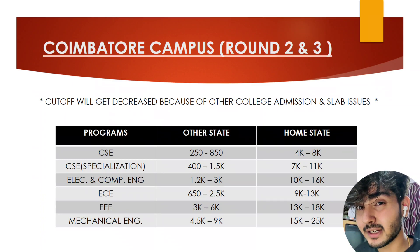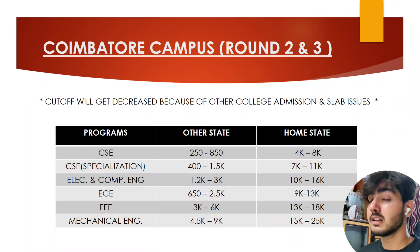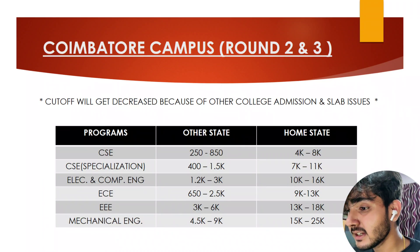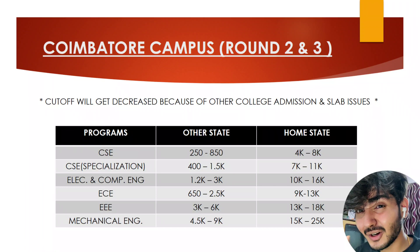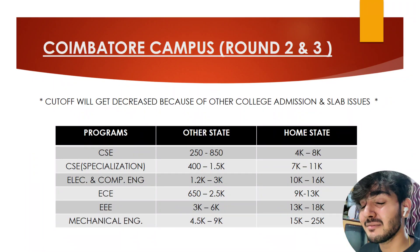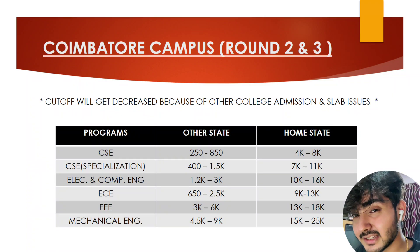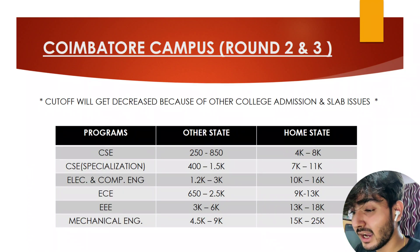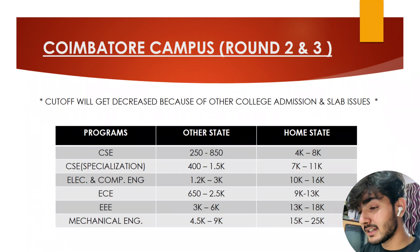These are expected data only — not fixed data — so use them just to get an idea. If you didn't get a seat in round one, don't worry, you will get it. If you didn't get any seat in round one, you have the chance to change your preferences according to this cutoff. Make sure you know what you're putting as first preference, second preference, and third preference.